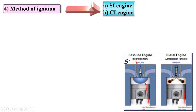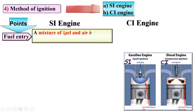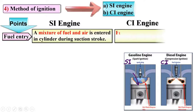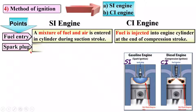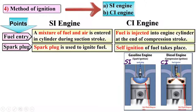According to the method of ignition, IC engines are classified as SI (spark ignition) engines and CI (compression ignition) engines. In an SI engine, a mixture of fuel and air enters the cylinder during the suction stroke, and a spark plug is used to ignite the fuel. In a CI engine, fuel is injected into the engine cylinder at the end of the compression stroke, and self-ignition of the fuel takes place.